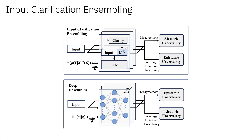Here I am showing a comparison between input clarification ensembling and deep ensembles, which gives a better idea of why these two approaches are so symmetric. Deep ensembles generates different models, which can be regarded as the process of minimizing epistemic uncertainty, whereas input clarification ensembling generates different input clarifications, which can be regarded as the process of minimizing aleatoric uncertainty. As a result, the correspondence of epistemic and aleatoric uncertainty is flipped. Input clarification ensembling shifts the burden of generating multiple models to generating multiple input clarifications, which is a relatively easy task for LLMs.